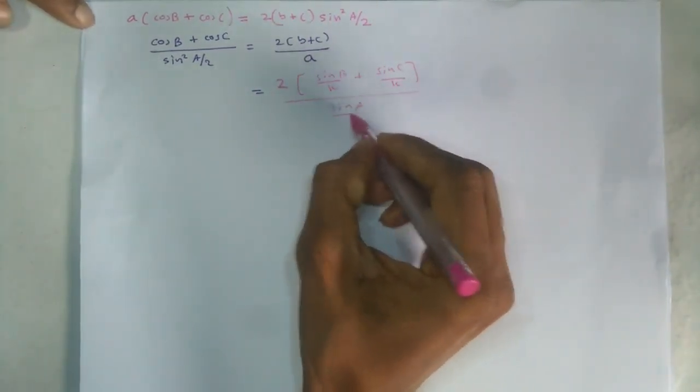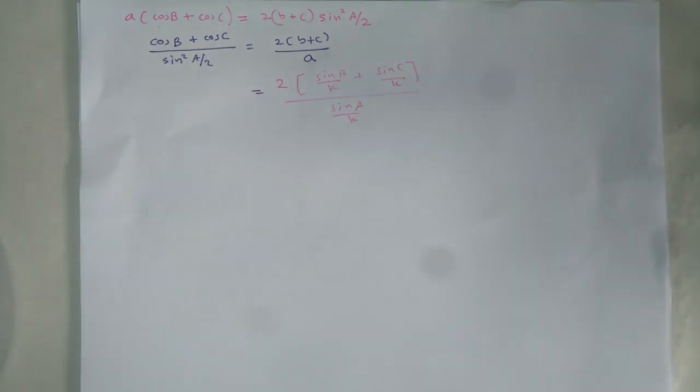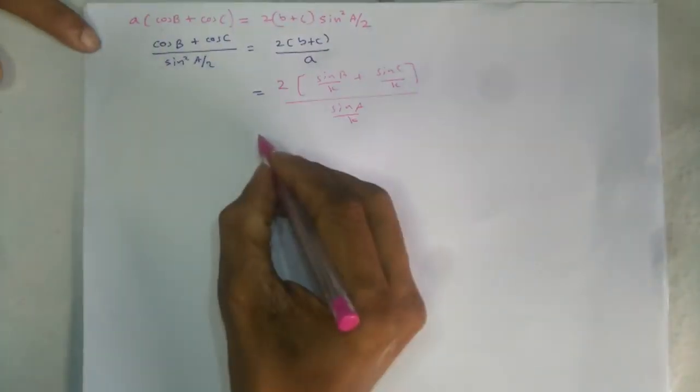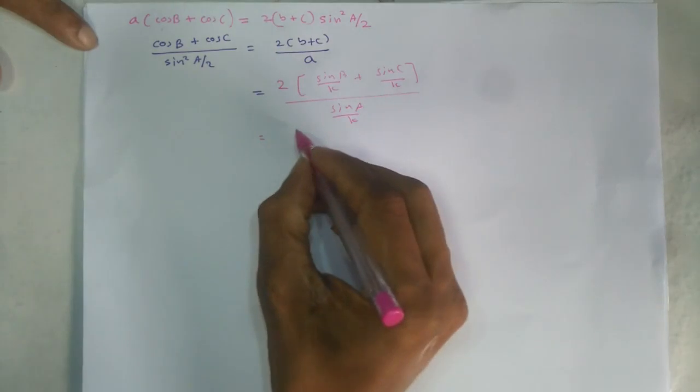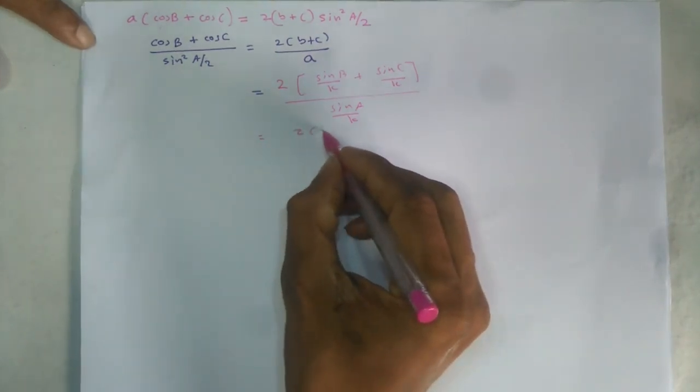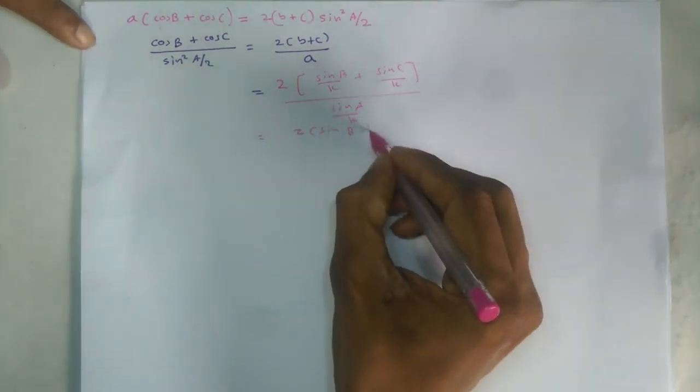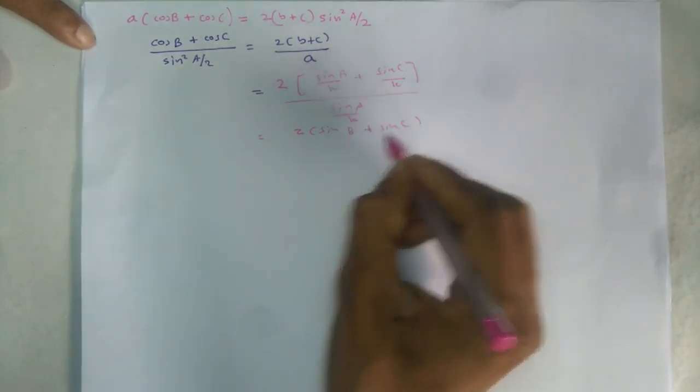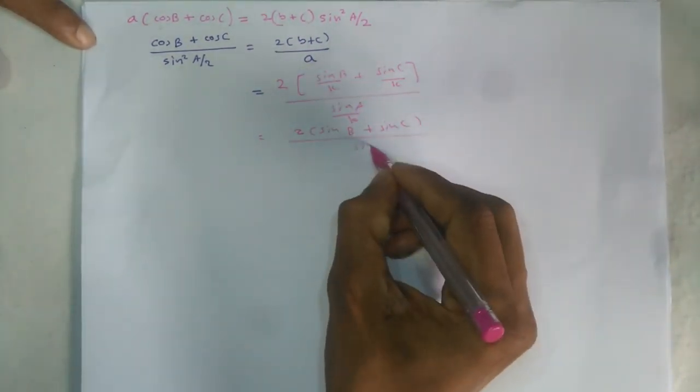Sin of E. What is the sign? K is a sign. Sign B, sign C, sign A. Sign A.